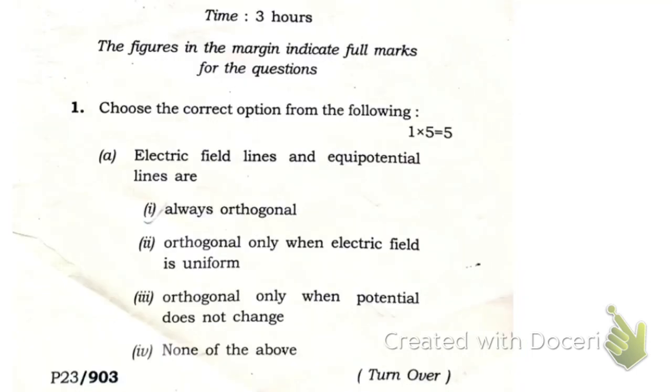Here is the first question. The correct option: electric field lines and equipotential lines are always orthogonal. This first option is correct - always orthogonal.